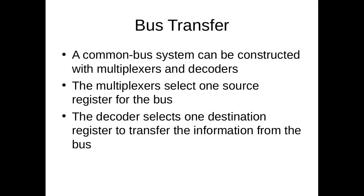In this video, we will explain how registers exchange or transfer data between them in the case of inter-register transfer. A common bus system can be constructed with multiplexers and decoders. Multiplexers select one source register for the bus, while the decoder selects one destination register to transfer the information from the bus.